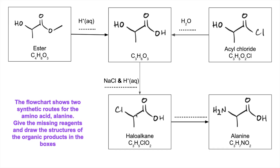Finally, how do you substitute this chlorine for the amino group? How do you turn a chloroalkane into an amine? You react it with ammonia — or an excess of ammonia — and ethanol.